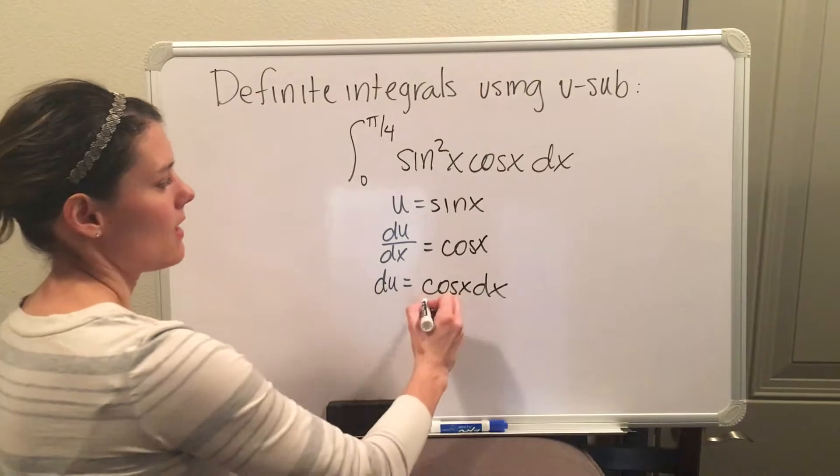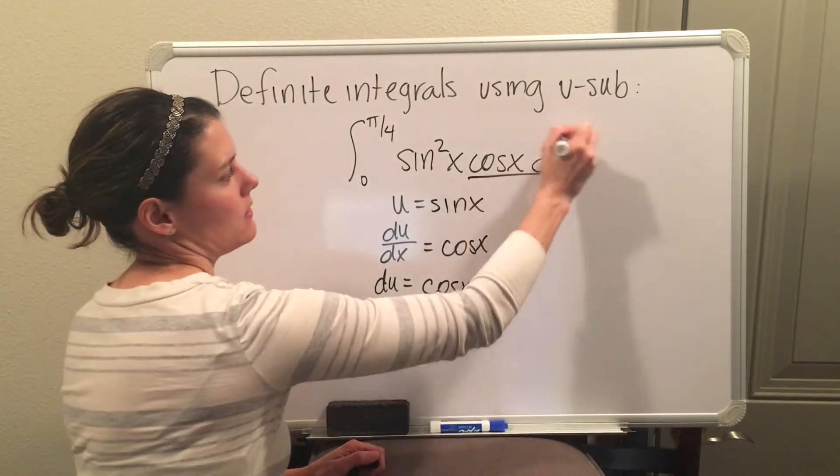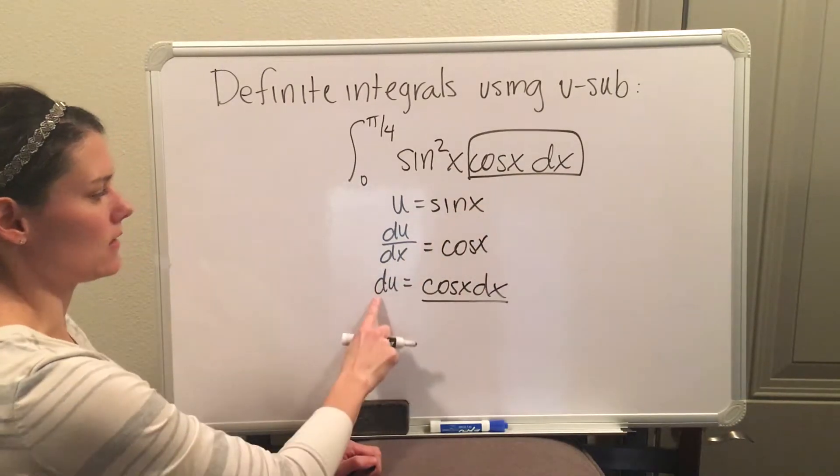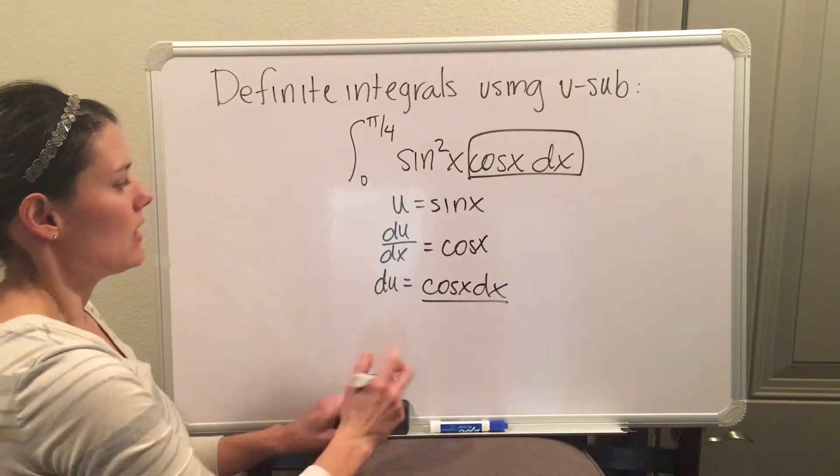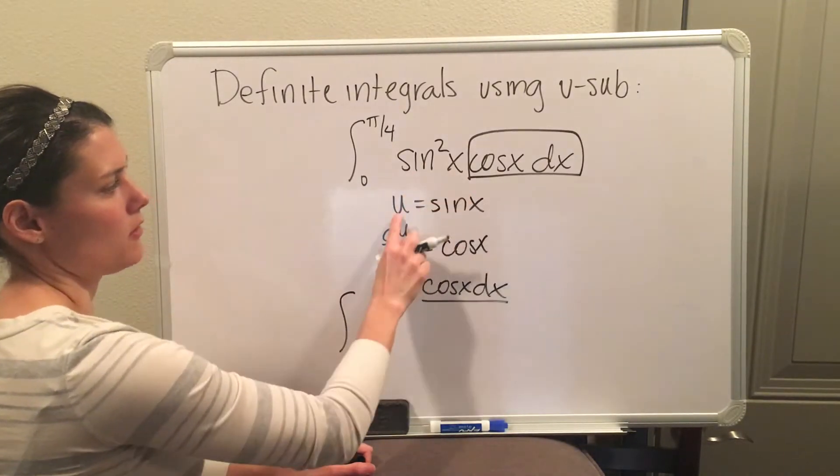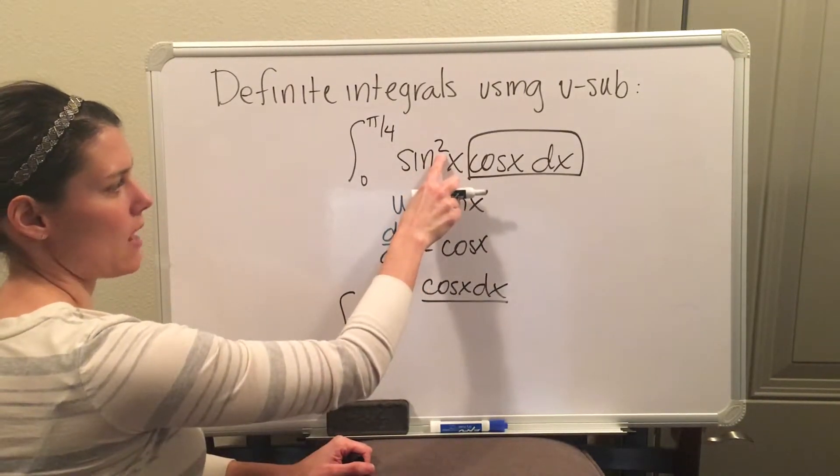And this works out great because cosine dx, which is right here, is now all going to be substituted as just du. And so what I'm going to end up with is the anti-derivative.